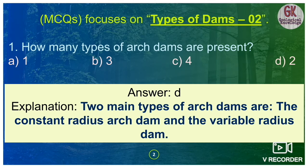The term 'abutment' refers to the sloping sides of a river valley upon which the sides of a dam rest. These are known as abutments — the sloping side of a river valley upon which the sides of a dam are stable. So the correct answer to Question 1 is option two: constant radius arc dam and variable radius arc dam.